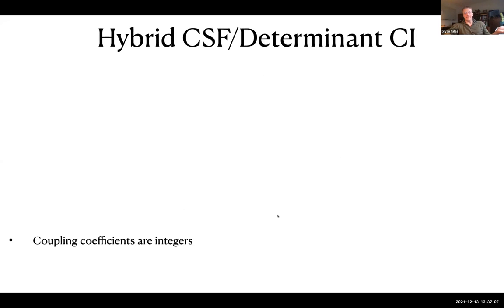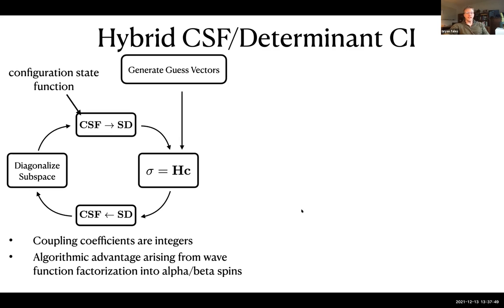You might ask why do we use determinants to begin with? There are significant algorithmic advantages to forming the sigma vector in a determinant basis. It would be foolish to rewrite our algorithms to use CSF, even though they do converge better. In this case, the coupling coefficients in determinants are integers. Not only are they integers, but they're plus one, minus one, and zero. They're really straightforward. The wave function can be conveniently factorized as an outer product of the alpha and the beta strings or the occupancy patterns. The disadvantages are that the determinant basis is significantly larger than the CSF basis. And as we've seen, we can run into convergence problems.